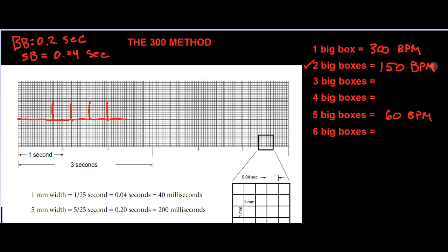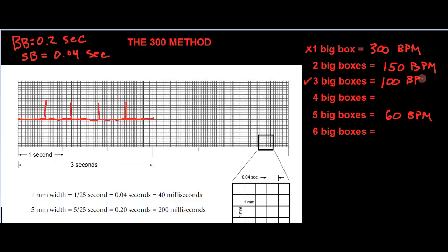What if they're three boxes apart consistently? That would mean three boxes apart is one-third the frequency of one box apart. So instead of 300 beats per minute, we would have 100 beats per minute.